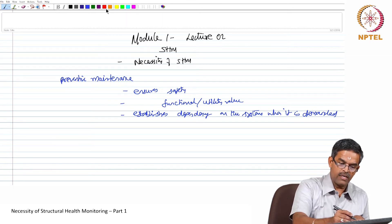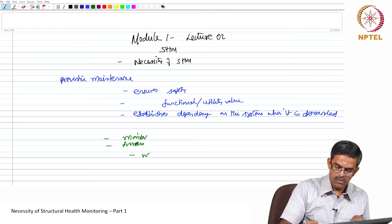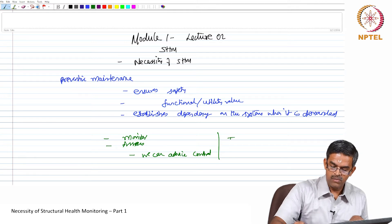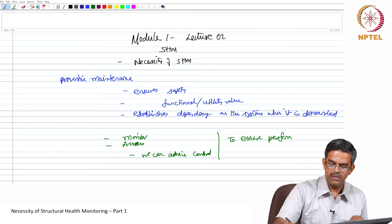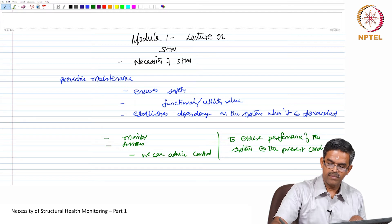To do this, we need to monitor, then assess, and if required we can advise control. So the overall objective is to ensure satisfactory performance of the system at the present condition.